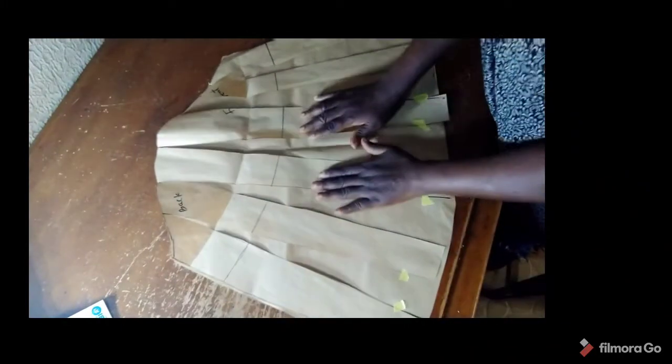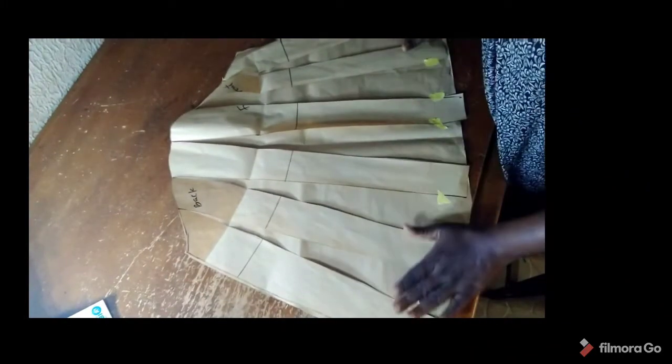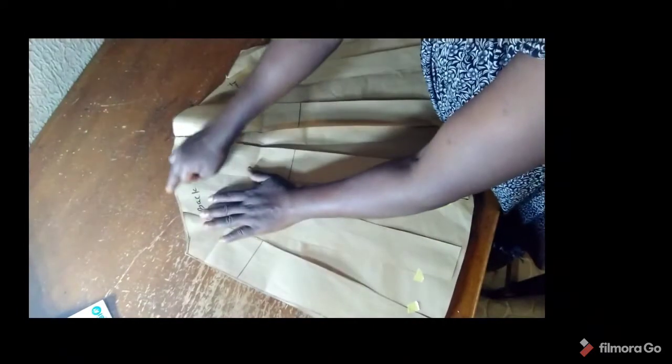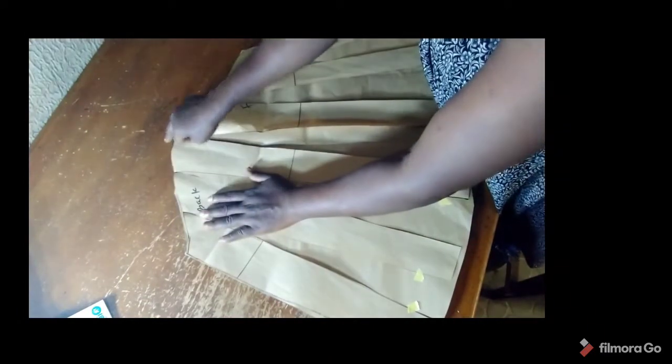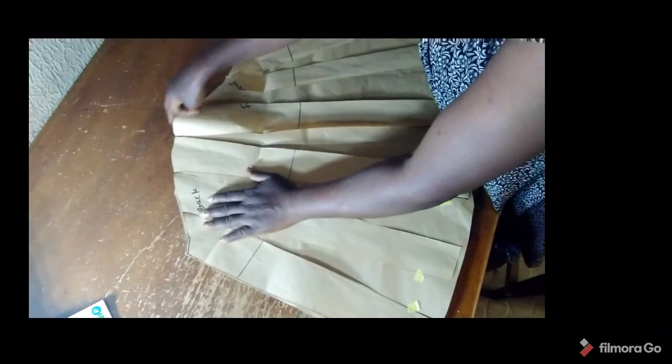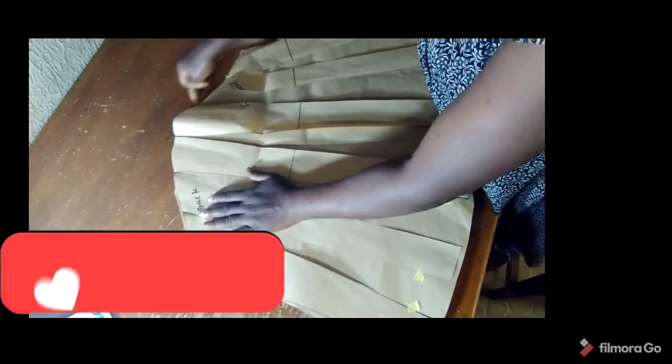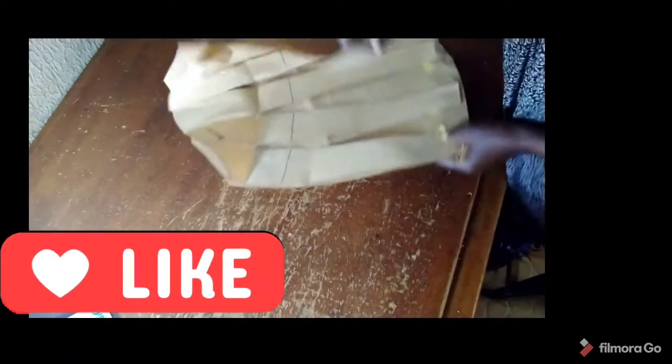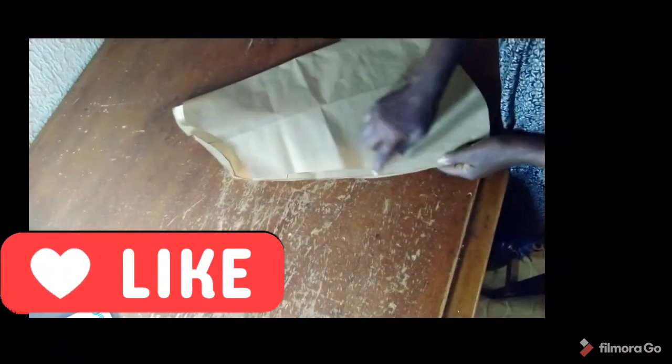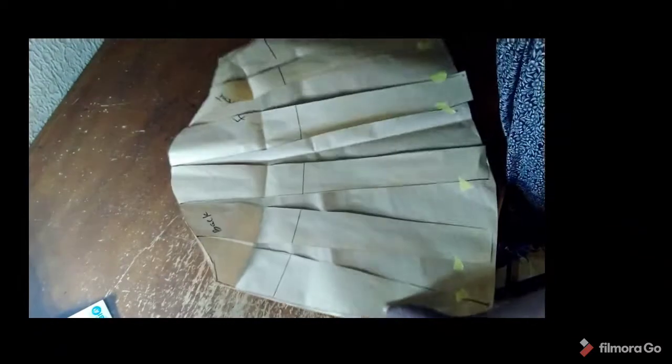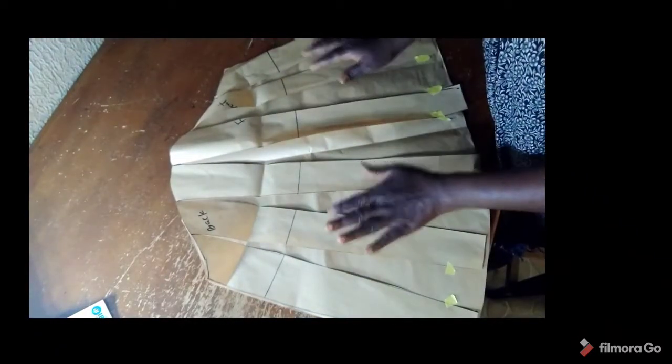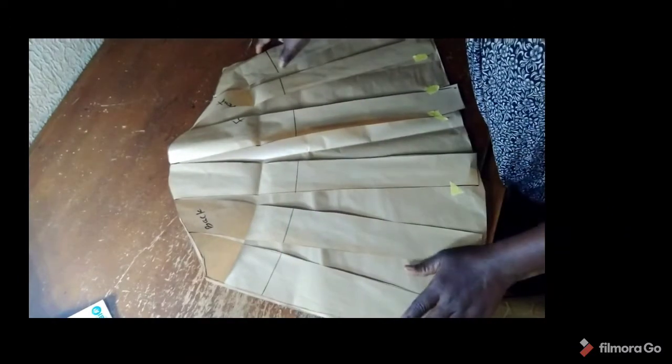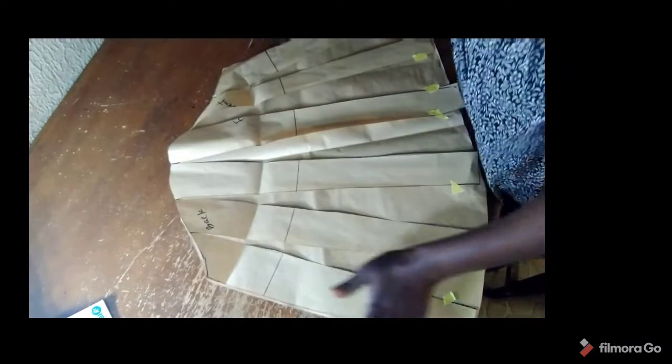So here is our bell sleeve. If you notice it, I maintain the shape of my arm to the shoulder. So if you want to cut your fabric now, you can place this directly on your fabric and cut it. Just follow the shape.